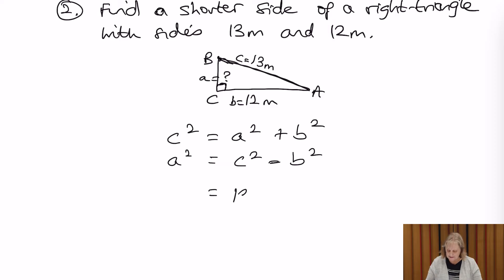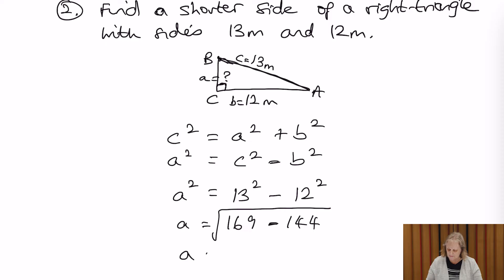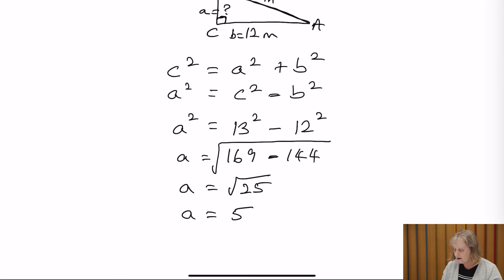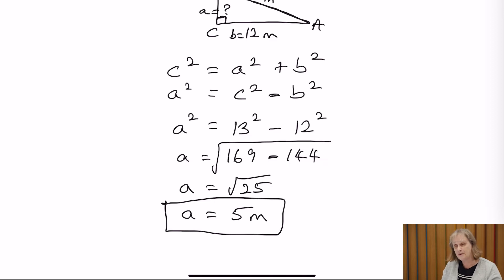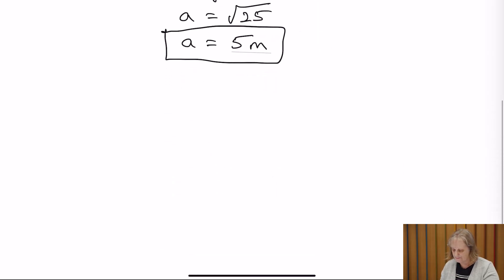Now we put in our values: c² is 13 squared minus b² which is 12 squared, and that equals a². Working out: 13 squared is 169, minus 12 squared which is 144. Bringing over the square, we have the square root of 25, which gives an answer of 5 metres. So we've found the shorter side of 5 metres. Again, this is the Pythagorean triple of 5, 12, and 13 — written in ascending order with the last being the hypotenuse.